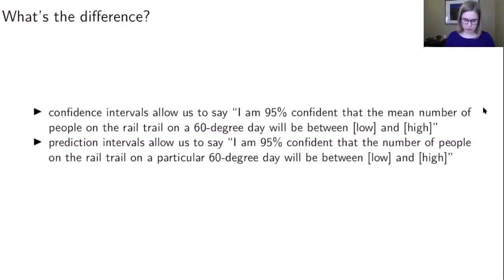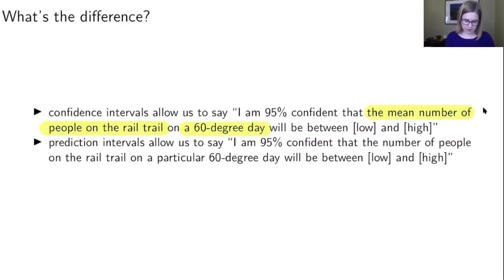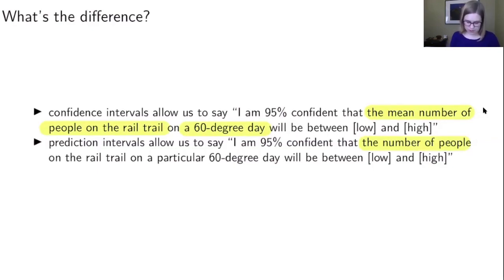With the rail trail example: for a confidence interval, we'd say 'I'm 95% confident that the mean number of people on the rail trail on a 60-degree day will be between the low and high end of the interval.' For a prediction interval, we'd say 'I'm 95% confident that the number of people on the rail trail on a particular 60-degree day will be between this low and high' — so the exact number of people on a particular day, not just all 60-degree days.